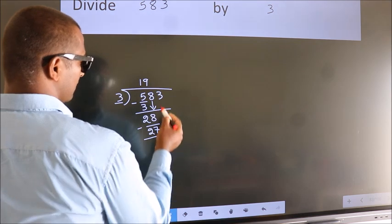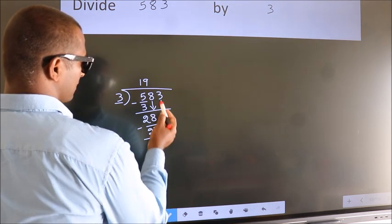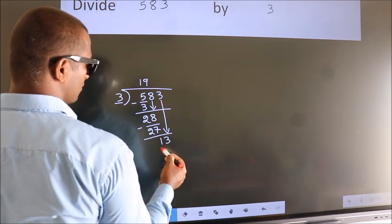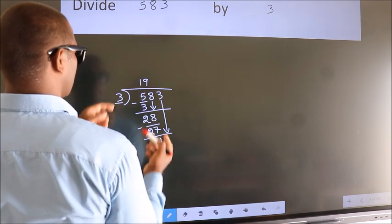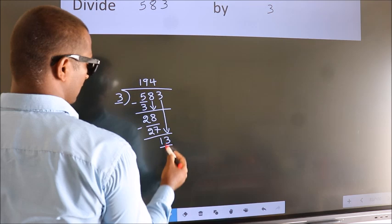After this, bring down the next number, so 3 down, giving us 13. A number close to 13 in the 3 table is 3 fours, 12.